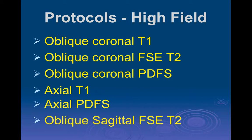I use axial T1 and axial PD fat sat, then oblique sagittal T2 without fat suppression. Most people fat suppress the oblique sagittal and like the black-white appearance, but you lose a lot of the subtleties of the signal changes. As with the ACL, when you fat suppress you tend to over-call disease and lose a lot of contrast and specificity. I think that's especially true in the shoulder.